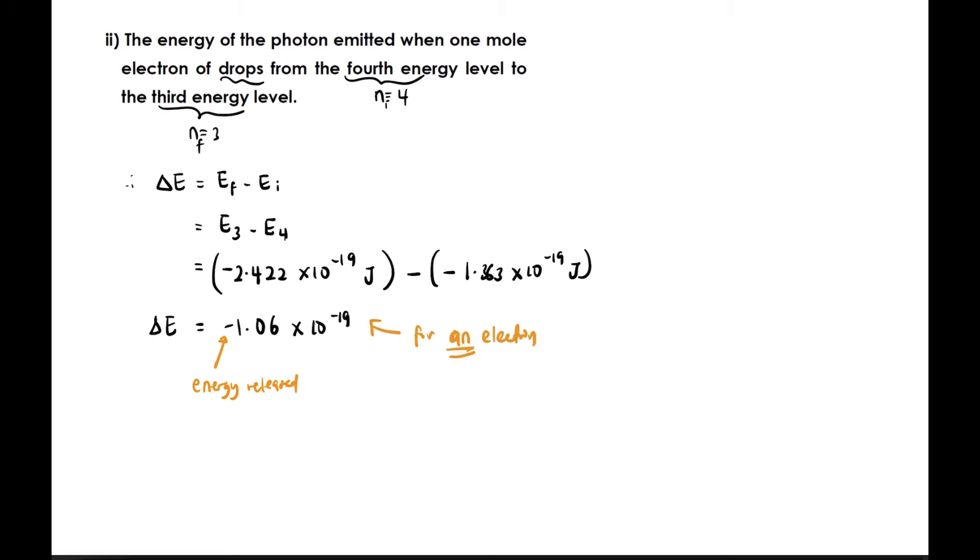This is the energy released for one electron, but the question asks for one mole of electrons. So how do we do this? For one mole, we need to relate it to Avogadro's number. Delta E for one mole of electrons: we multiply the previous value by Avogadro's number, 6.02 times 10^23 per mole. Don't forget to multiply. We get negative 63843.8 joules per mole, or we can convert to kilojoules by dividing by 1000, giving negative 63.8438 kilojoules per mole.